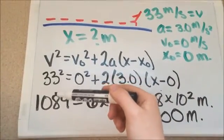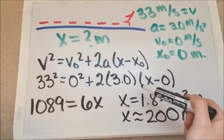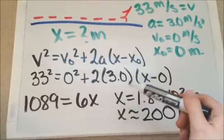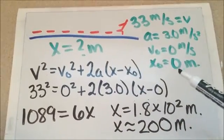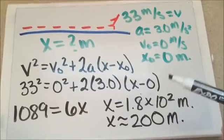33, so as we plug in our numbers, 33 squared equals zero squared plus 2 times 3 times x minus 0. 1089 equals 6x is found using basic math and thus x equals 1.8 times 10 to the second meters. Thus, in the real world, they probably make it 200 meters.